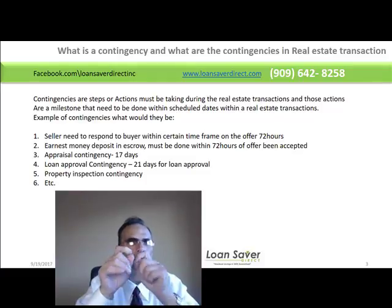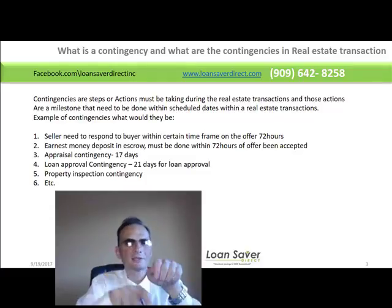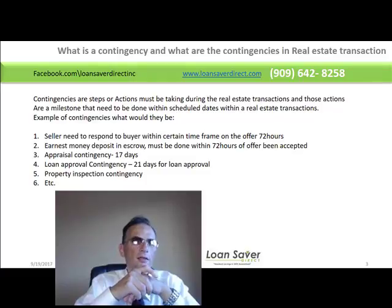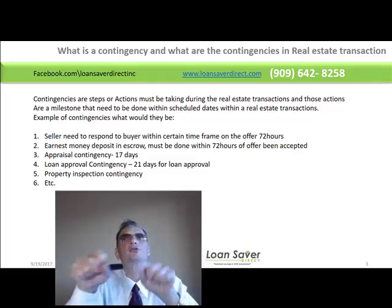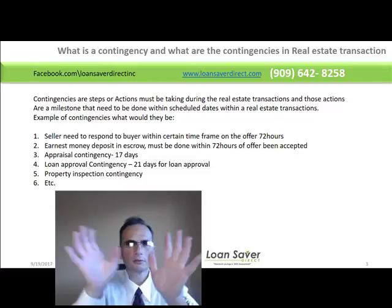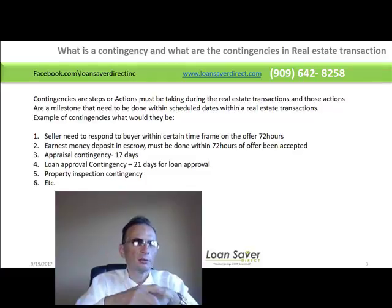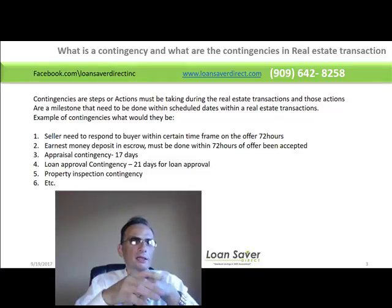Say the buyer puts an offer on a property — the seller has to respond within three days, within 72 hours. That's a contingency on the seller. If the seller accepts the offer, the buyer has to bring the money to escrow within 72 hours, otherwise the contract will not exist. The same applies to the earnest money and the escrow deposit.